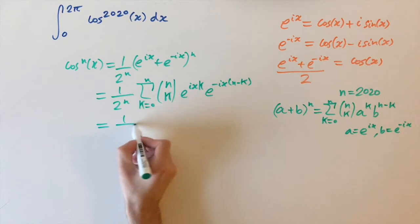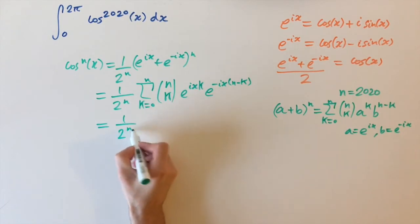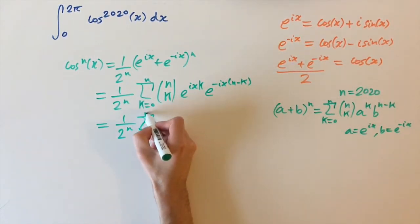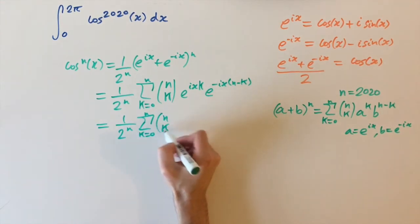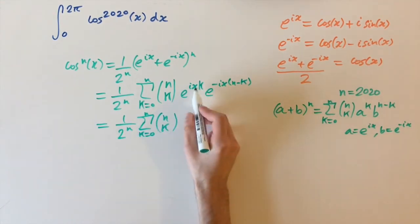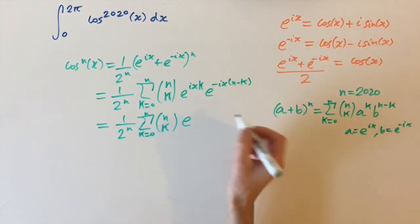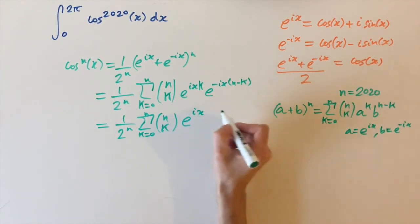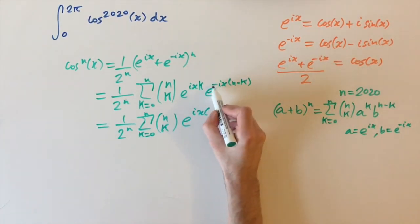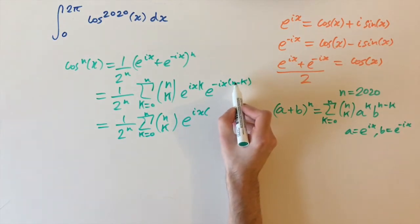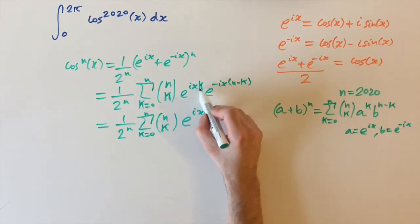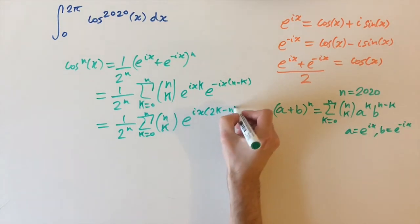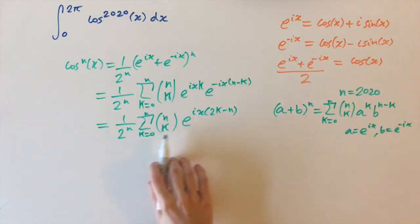This simplifies to one over two to the power of n times the sum from k equals zero up to n of n choose k times e to the power of i times x. Combining the exponents — multiplying the minus with the bracket gives plus k minus n, plus the k — gives us 2k minus n.